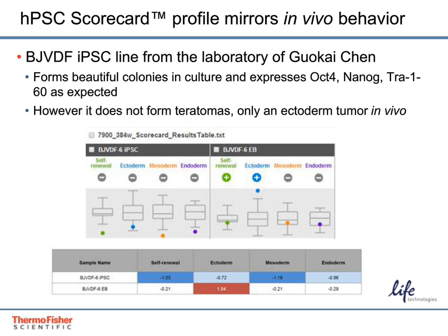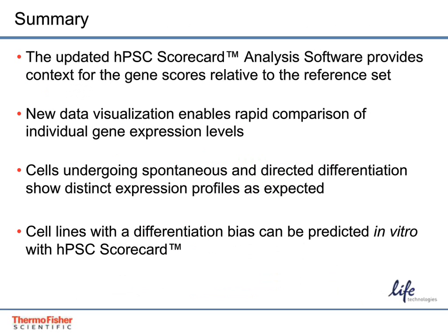Now let's review what we've covered in today's presentation. The updated HPSC scorecard analysis software provides context for gene scores relative to the reference set. New data visualization enables rapid comparison of individual gene expression levels. We've shown that cells undergoing spontaneous and directed differentiation show distinct expression profiles as expected. And finally, cell lines with a differentiation bias can be predicted in vitro with the HPSC scorecard assay.